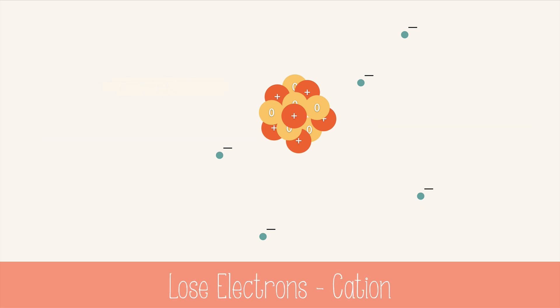When an atom loses an electron, the protons outnumber the electrons, leaving the atom with an overall positive charge. That is how cations are formed. Cations are positively charged ions. I remember cations are positive because they have a T in it, and it looks like a plus sign.